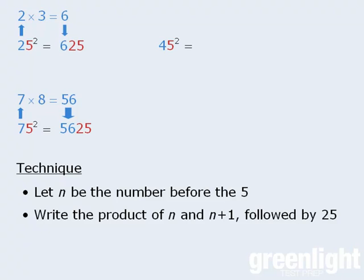Let's try 45 squared. First, take the number in front of the 5, which is 4, then multiply 4 by the number that is 1 greater than 4. In other words, multiply 4 by 5 to get 20. Now write 20 down here and add 25 to the end. So 45 squared equals 2025.